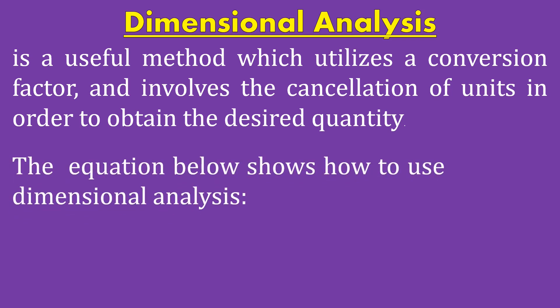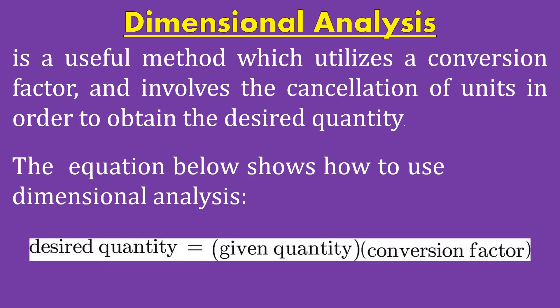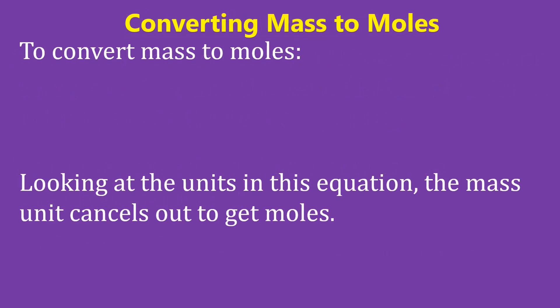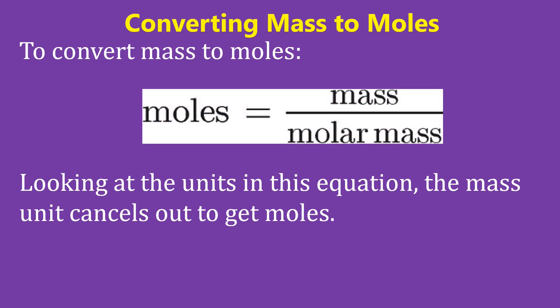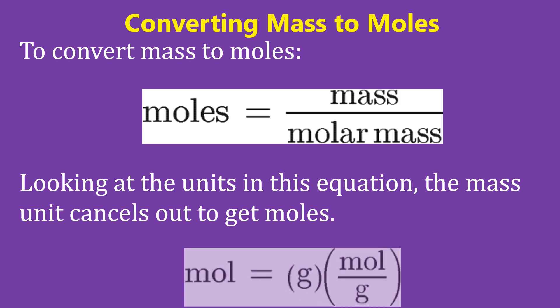The equation below shows how to use dimensional analysis. The desired quantity equals the given quantity multiplied by its conversion factor. To convert mass to moles, we use the formula: moles = mass ÷ molar mass. Looking at the units in this equation, the mole unit cancels out to get the mass unit.